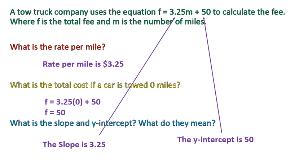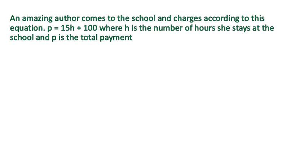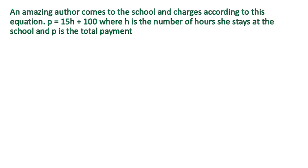So knowing that, we could be able to go on to our next question and not have to go through quite as many steps. Let's look at this. An amazing author comes to the school and charges according to this equation, p equals 15h plus 100, where h is the number of hours she stays at the school, and p is the total payment. Let's take a look.